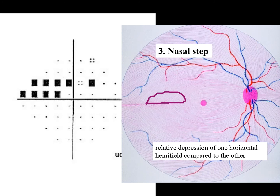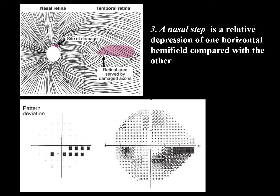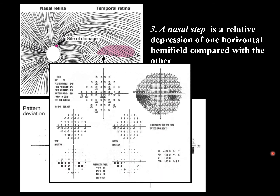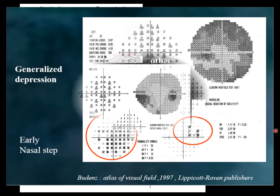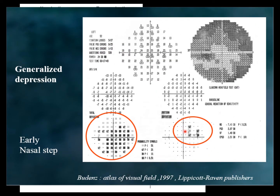Third, we have the nasal step. You can diagnose a nasal step if you have changes in one of the hemispheres and no similar changes in the opposite hemisphere, as in this example. Again, we see something here on the nasal area and nothing in the opposite hemisphere.